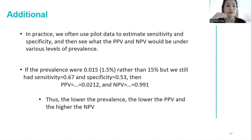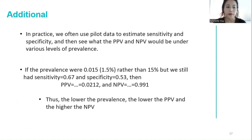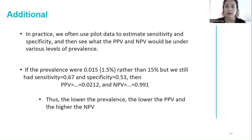Even with much higher sensitivity and specificity, say greater than 0.9, screening a low-risk population where disease prevalence is low can result in very low PPV.